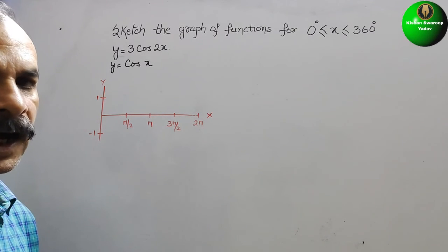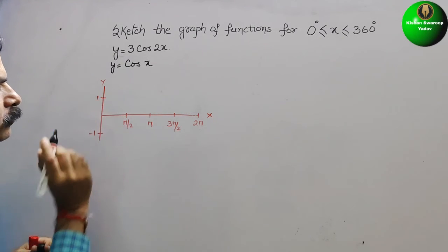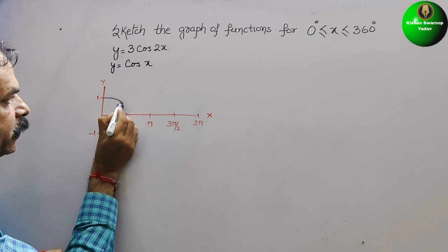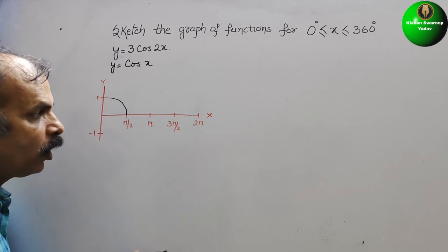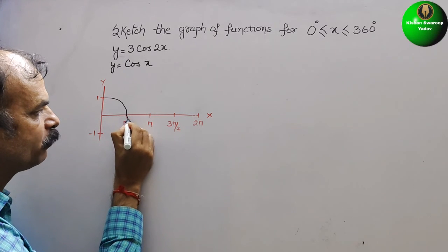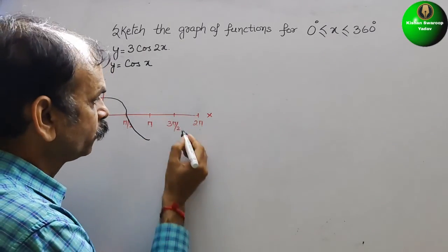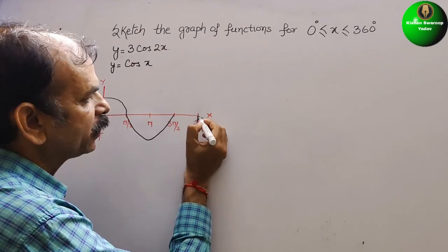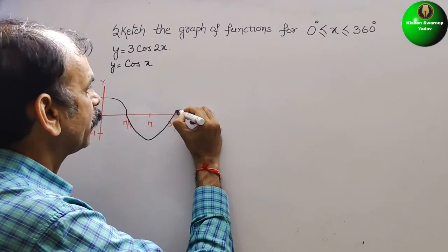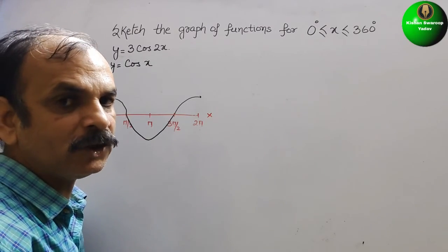Now drawing the graph: cos 0° = 1, so it starts at 1. Cos 90° = 0, so it comes down and meets the x-axis. Cos 180° = −1, so it meets at minus 1. Then at 270° it is 0 again, so it goes back up to meet the x-axis. And at 360°, cos is back to 1.